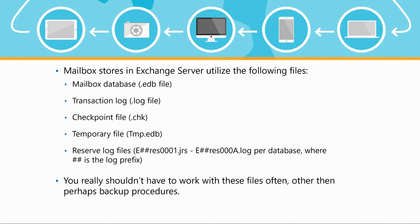The different files involved in a mailbox database: the EDB file is the main file storing your mailbox information. You also have transaction log files — many of them created over time. Transaction logs store information before it makes its way to the database: information is written to the transaction log first, then committed to the database. Another file is the checkpoint file, which keeps track of tasks being written to the log and to the database, confirming what has been committed from the log into the database.